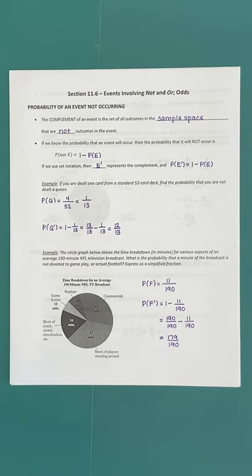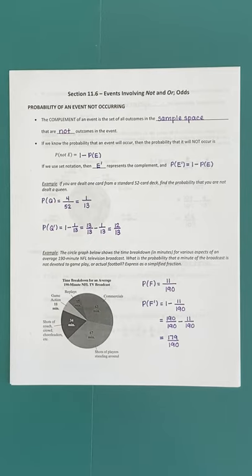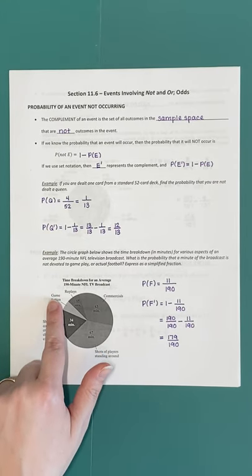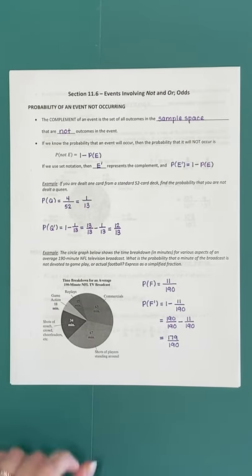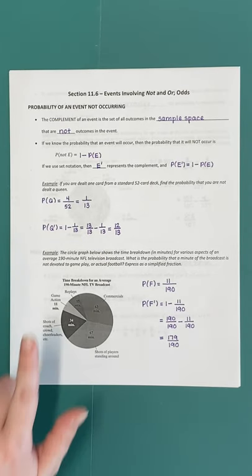The circle graph shows the time breakdown in minutes for various aspects of the average 190-minute NFL television broadcast. What is the probability that a minute of the broadcast is not devoted to gameplay? Imagine recording the broadcast and fast-forwarding to one particular minute — what's the probability that you land on a minute where they're not actually playing? Based on the graph, actual play constitutes about 11 minutes.